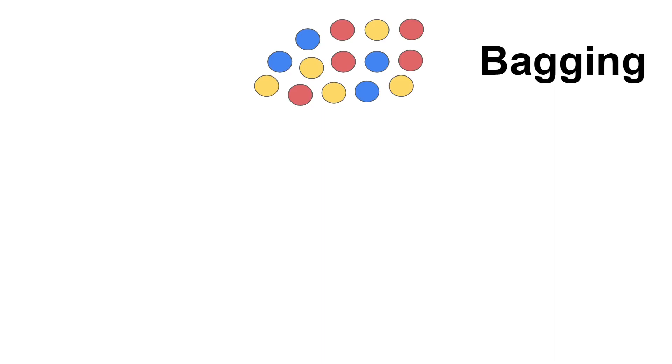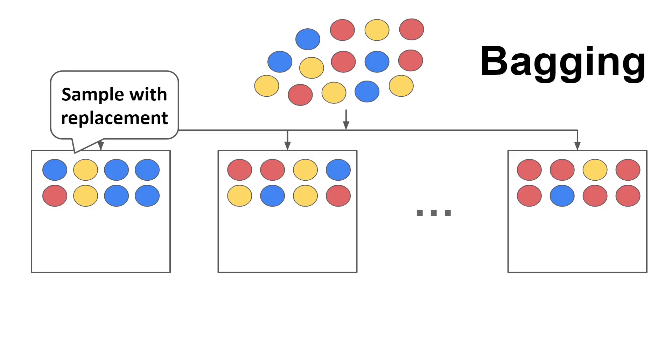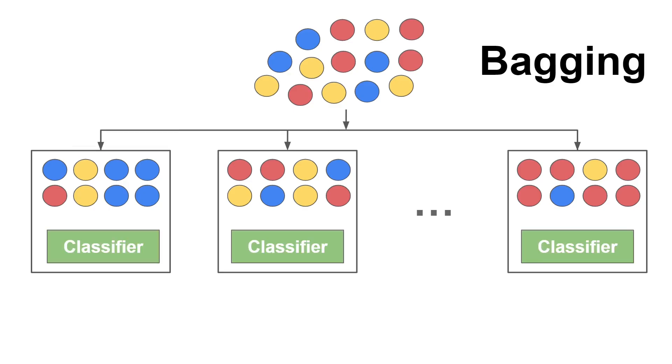To start with, let's suppose that we have a dataset. What bagging does with this dataset is quite simple. You create N sub-datasets of equal size by sampling with replacement from the original dataset, a technique known as bootstrapping, and train a classifier on each sub-dataset.